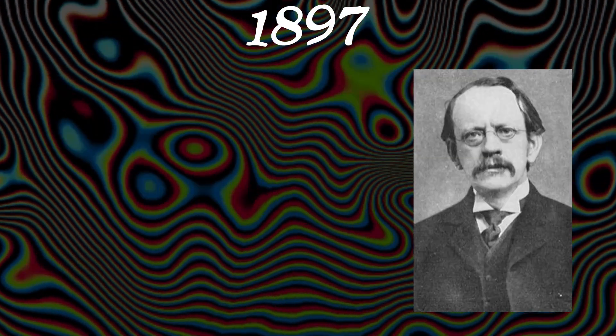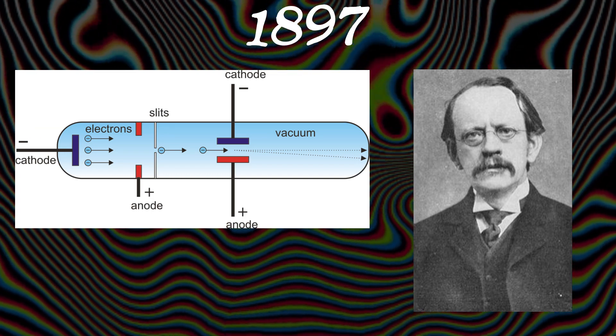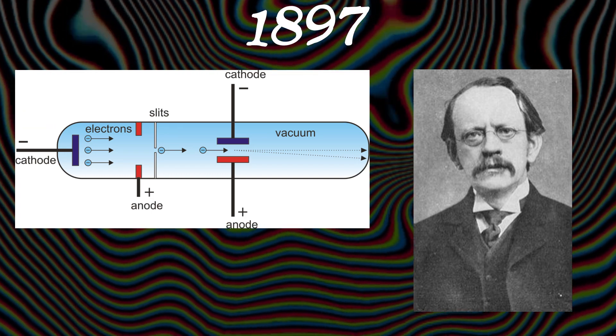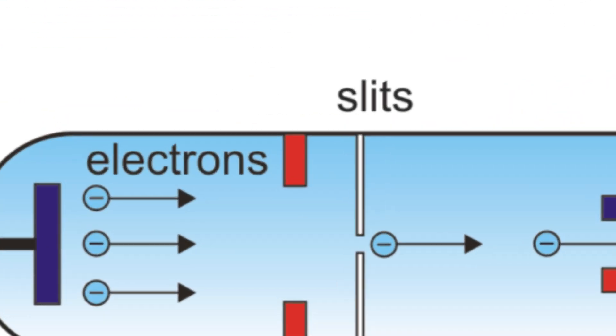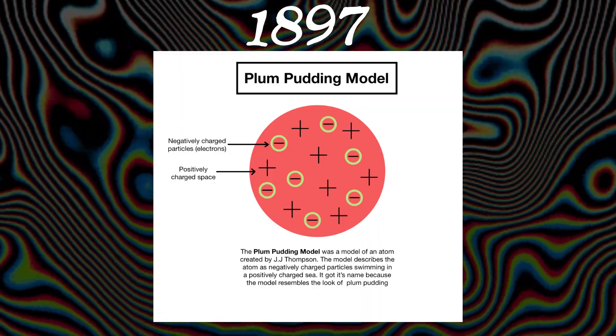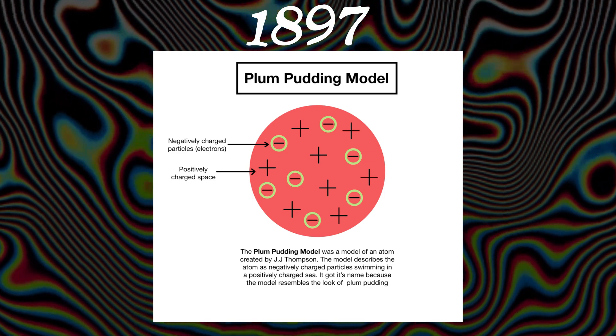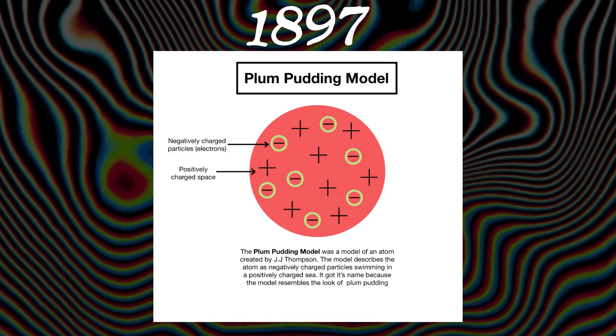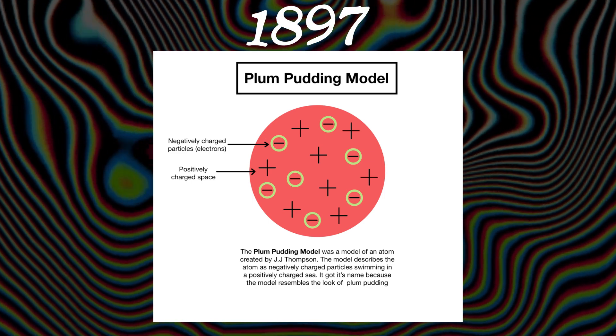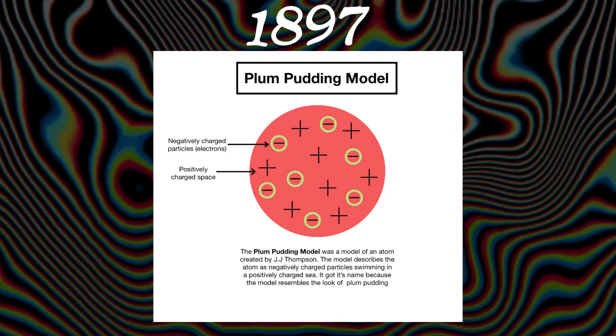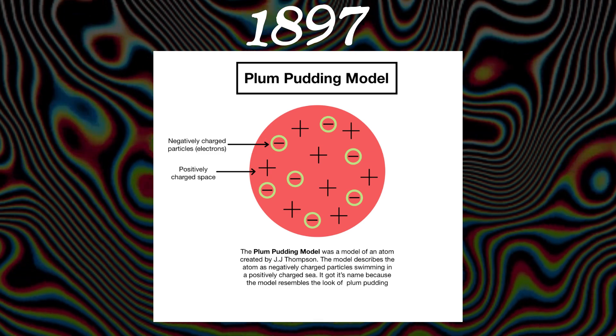In 1897, scientist JJ Thompson discovered the cathode ray, composed of negatively charged particles which are now called electrons. This is a really bad, outdated model of an atom that he made. Protons weren't discovered yet, so he thought that everything besides the electrons in the atom were just empty positive space. This was just the very start of modeling atoms, and it gets much more in depth from here.